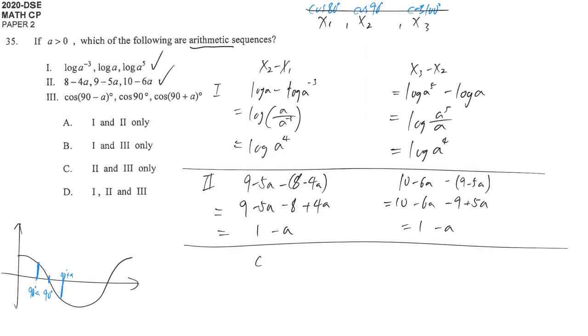we simplify the functions: cos(90° - a) equals sin a, cos 90° equals 0, and cos(90° + a) is in the second quadrant, so it equals -sin a.